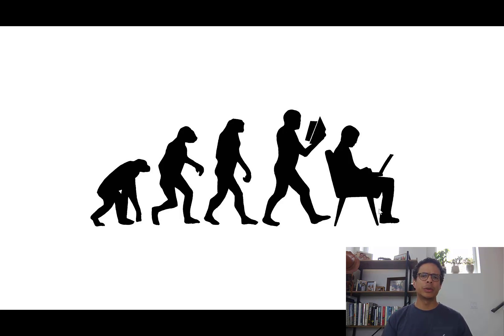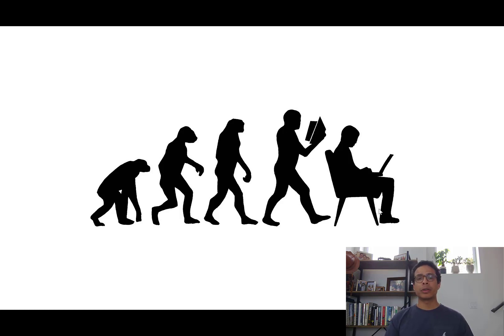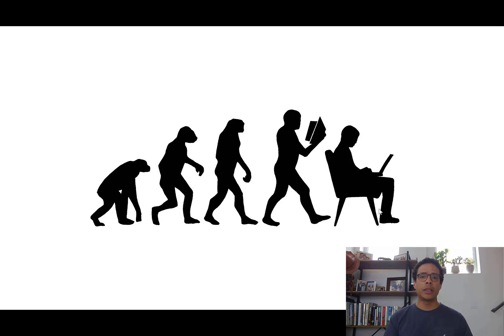But what does this have to do with papers and products? Well, I usually think that the evolution process from a research idea and paper to a product was also a linear process.